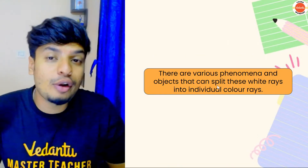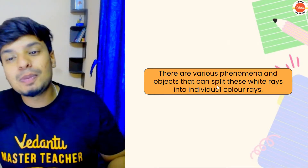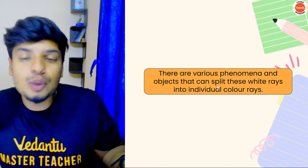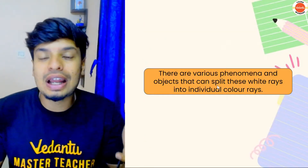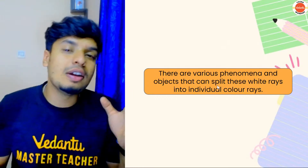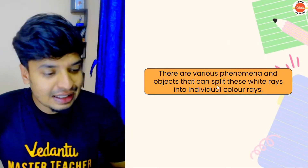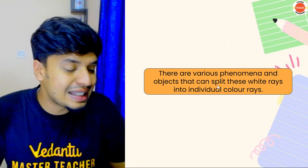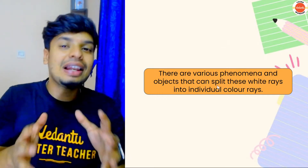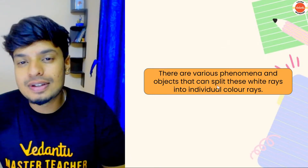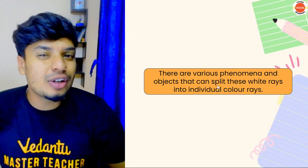There are various phenomena and objects that can split the white light into its individual colors. The process of splitting of white light into its component colors is called dispersion of light. So we are dispersing the light into its component colors, which is VIBGYOR — the band of colors, or it's also called as the spectrum of colors.